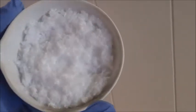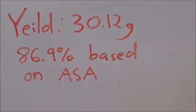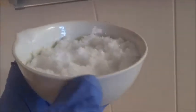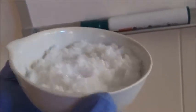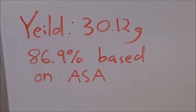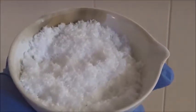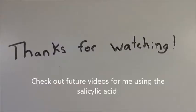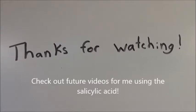Here is the final product: 30.12 grams of a fluffy white crystalline powder, which should be relatively pure salicylic acid. An 87% yield based on the ASA, and I'm pretty happy with it. Thanks for watching — don't forget to rate, comment, and subscribe.